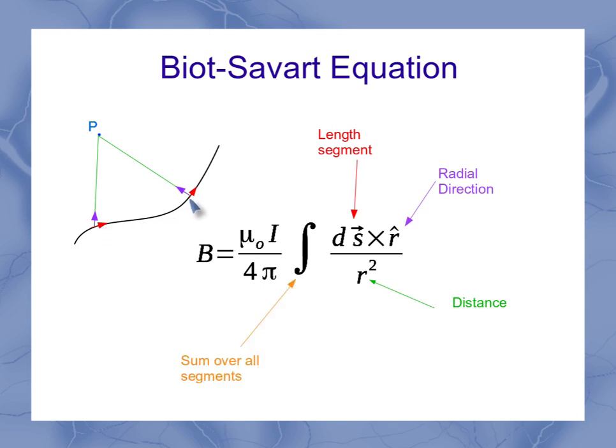We can do that for each individual segment, but the integral tells us that what we really want to do is we want to sum up the contributions over all of those different line segments. And that will give us the overall magnetic field at our point p out in space.